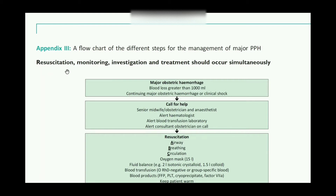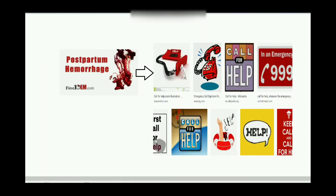It is very important that these steps should occur simultaneously — we should perform all these steps at the same time. Whenever there is a major hemorrhage of more than 1000 ml, we have to continue obstetric hemorrhage or clinical shock management. The first step is to call for help.